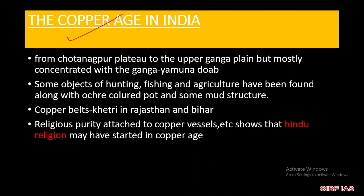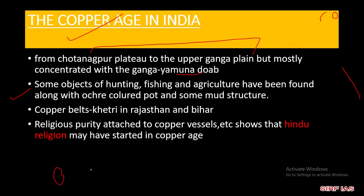अब Copper Age — हमारे India में बताऊँ तो Chota Nagpur plateau से लेकर Doab में आपको देखने को मिलेगी। Hunting, fishing, agriculture के कुछ objects देखने को मिलेंगे। साथ ही साथ ochre-colored pottery — गेरू के color के pots — देखने को मिले हैं, और कुछ mud structures भी। Copper belts कहाँ-कहाँ हैं — Khetri, Rajasthan में और Bihar में आपको copper belts देखने को मिलेंगी। Copper vessels और utensils में religious चीज़ें देखने को मिली हैं — यह दिखाता है कि शायद Hindu religion का start copper age से हुआ है।